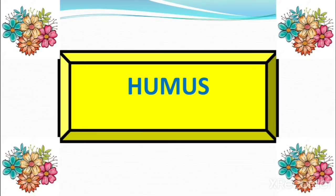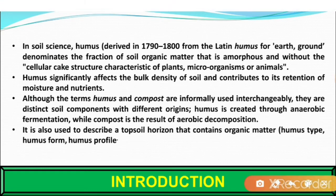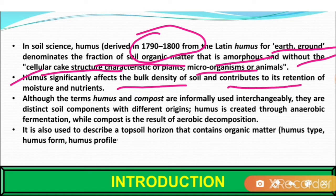Hello everyone. In this video lecture we are going to understand about humus from soil microbiology. In soil science, the term humus was derived around 1790 to 1800 from the Latin word meaning earth or ground. It dominates the fraction of soil organic matter that is amorphous and without the cellular structure characteristics of plants, microorganisms, and animals. Humus significantly affects the bulk density of soil and contributes to its retention of moisture and nutrients.